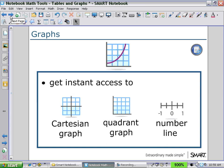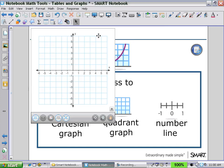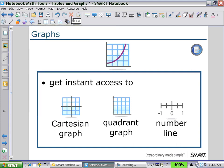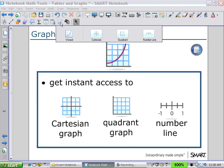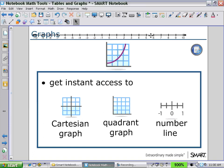With the graph tools, we have instant access to a variety of graphs. So by just selecting the graph icon on the secondary or math toolbar, we could choose a Cartesian graph. Or we could choose our quadrant graph. Or we also had instant access to a number line.